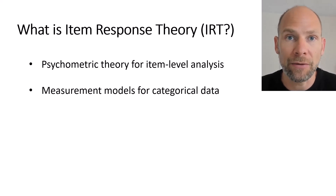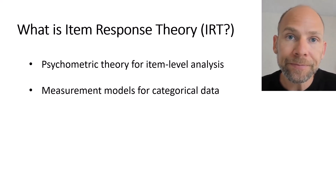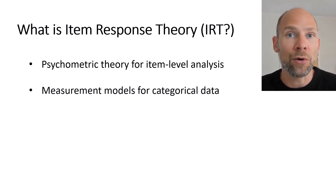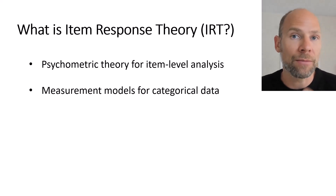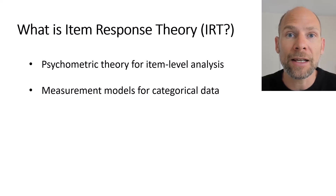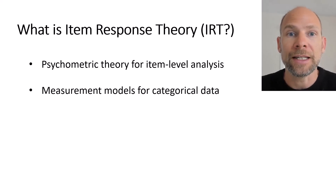Or you have Likert-style questionnaire items rated on a four-point or five-point scale from completely agree to completely disagree. Those types of response variables or item scores are categorical — they're not continuous, not metrical — and therefore they require special treatment. Item response theory is designed to handle items that are binary or ordinal in particular.